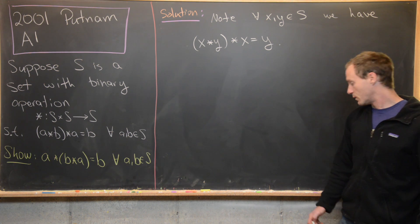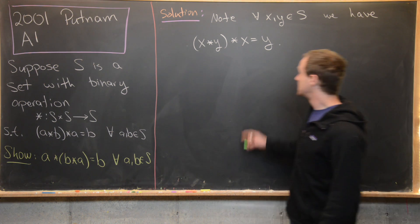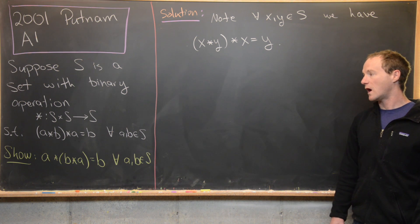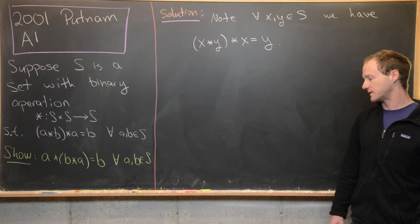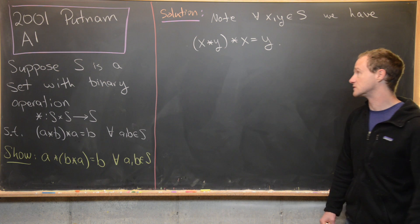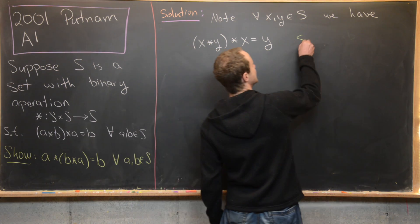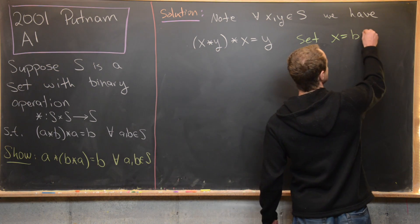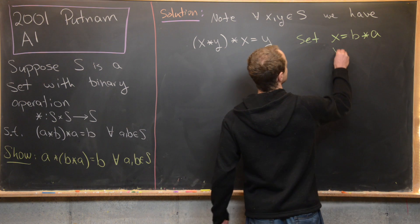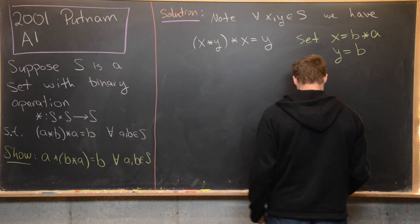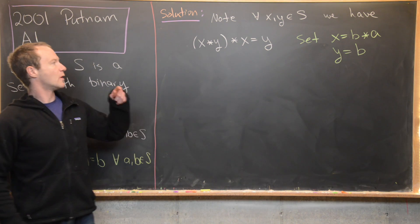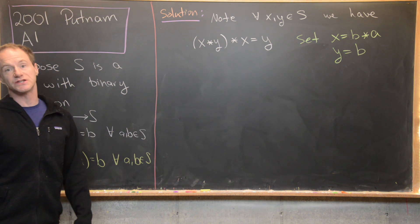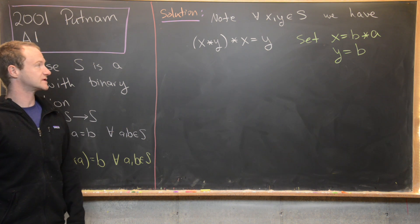Now what we want to do is set X and Y equal to something in terms of A and B. Specifically, we'll set X equal to B★A and Y equal to B, and then look at what the equation turns into under both of those conditions.